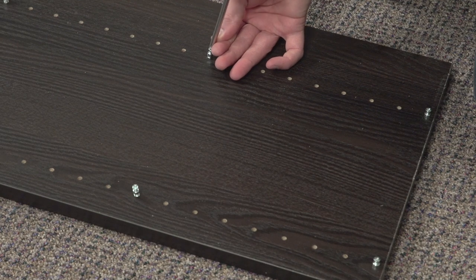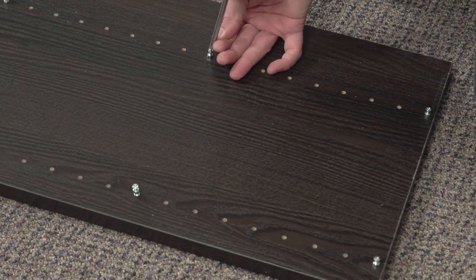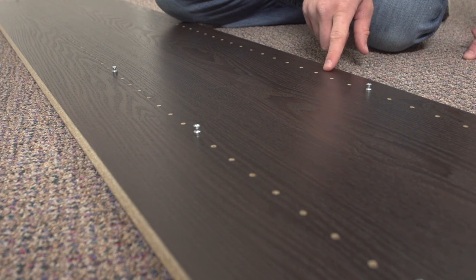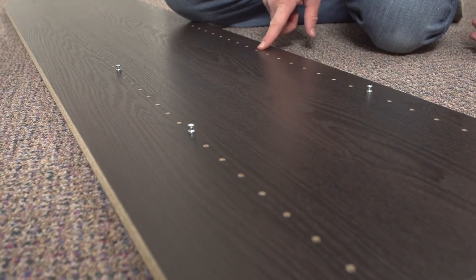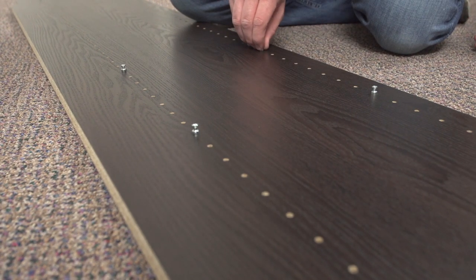Install the cam dowels from the cam lock pack into both of the uprights using a screwdriver. For this particular design, we are installing cam dowels in the top holes and also in the first, ninth, and seventeenth holes on the bottom.